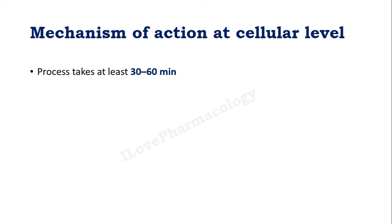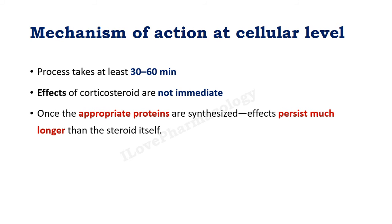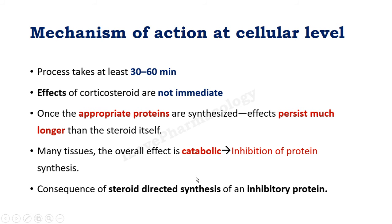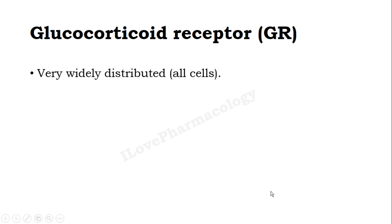This entire process of specific protein synthesis takes at least 30 to 60 minutes, so the effects of corticosteroids are not produced immediately. Once the specific protein is synthesized, the effects persist much longer than the steroid itself. Overall, in the majority of tissues, corticosteroids show a catabolic effect — that is, inhibition of protein synthesis — mainly as a consequence of steroid-directed synthesis of inhibitory proteins.